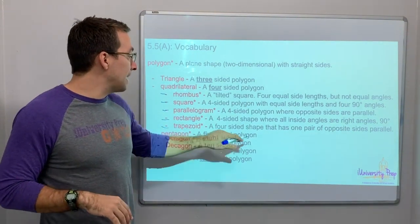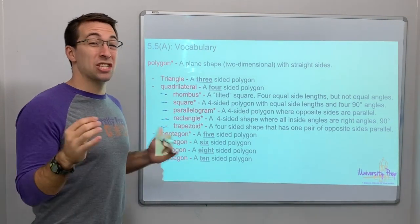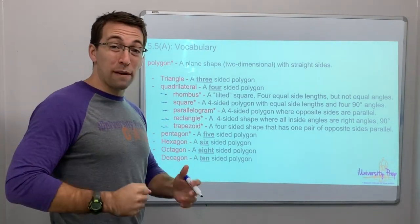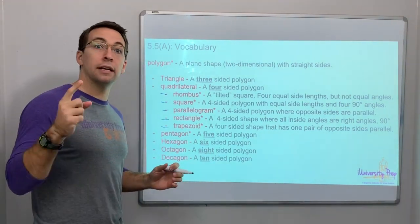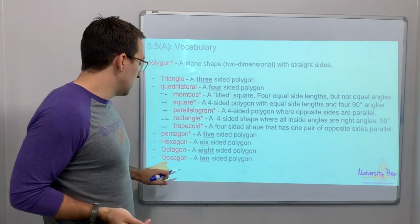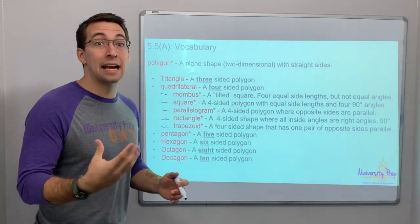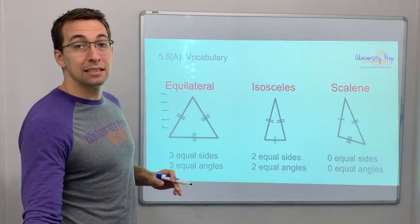Pentagon is a five-sided shape. Hexagon is six-sided, like a honeycomb. Octagon - for UFC fans - is an eight-sided polygon. Also a stop sign is an octagon. A decagon is a ten-sided shape, like a decade has ten years.